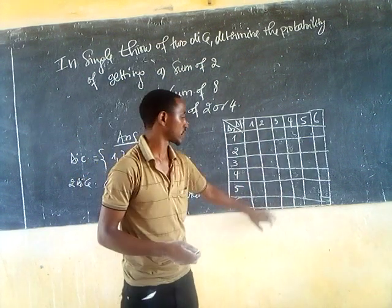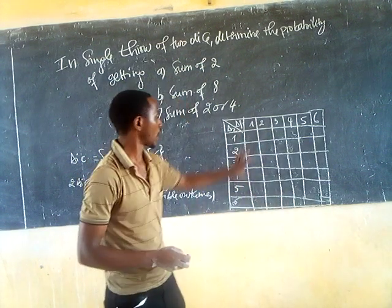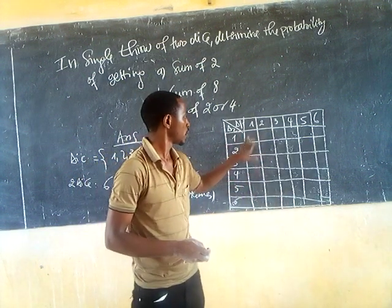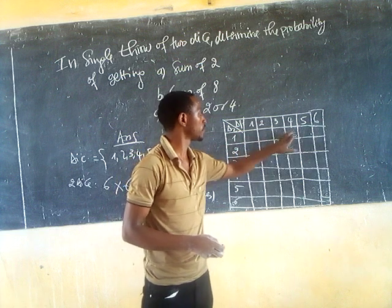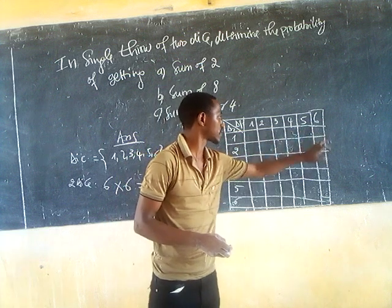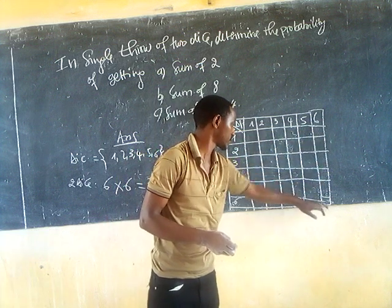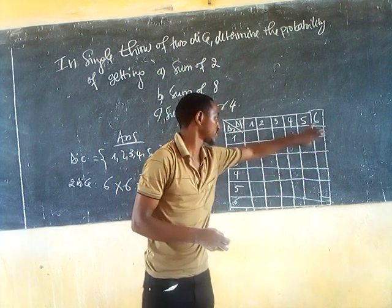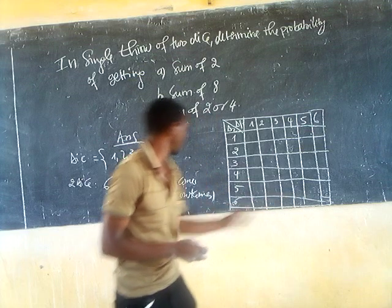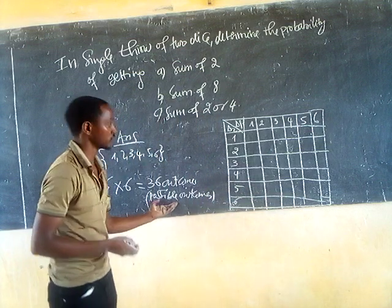This gives us the two-outcome grid. Counting all entries: one, two, three, four, five, six — and again one, two, three, four, five, six. We take six times six, and we get the total outcome of thirty-six.